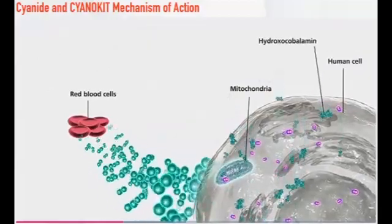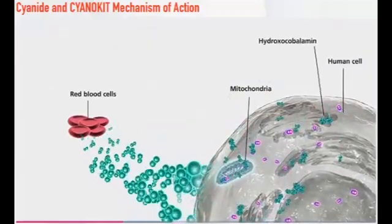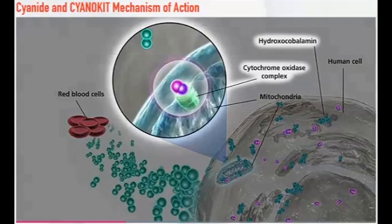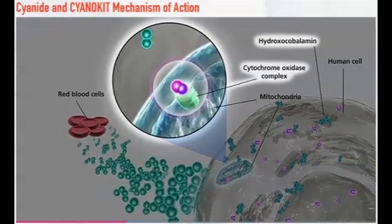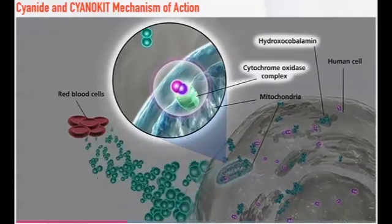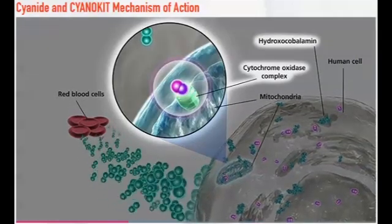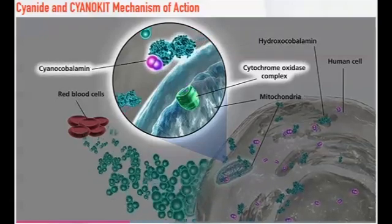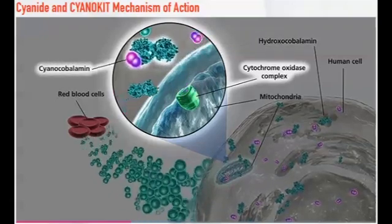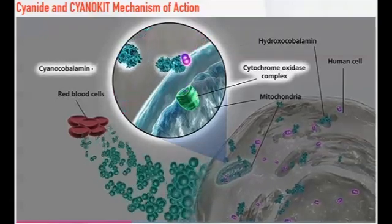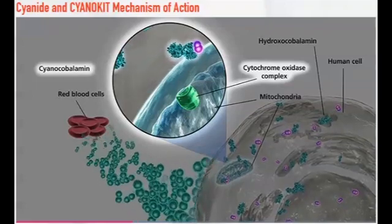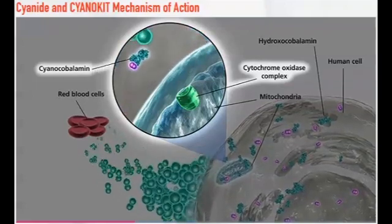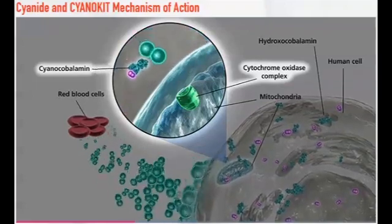Hydroxocobalamin can be used to treat cyanide poisoning. Each hydroxocobalamin molecule can deactivate one cyanide ion, when its hydroxo portion is replaced by the cyanide ion. This reaction results in the formation of non-toxic cyanocobalamin, allowing the cells to use oxygen again.